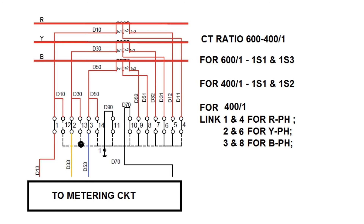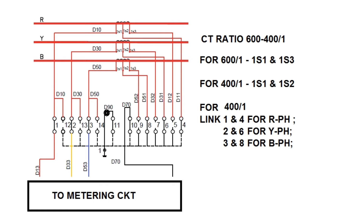On the other side, D13 (red phase) is taken to the metering panel, D33 (yellow phase) is taken to metering for yellow phase, and D53 is taken to metering for blue phase. After the metering circuit, CT shorting is done for the other terminal, neutral is taken out, and D70 is taken back to TB number 10. TB number 11 is connected to earth for earthing purpose.